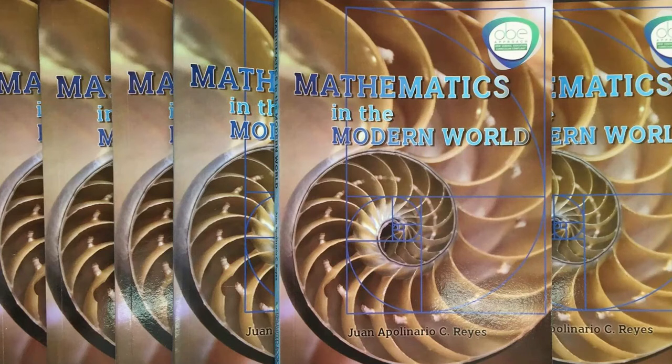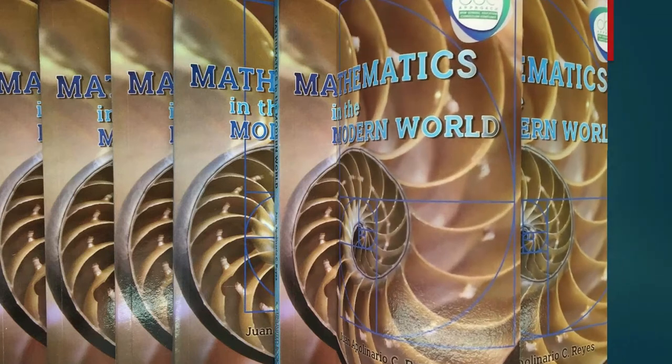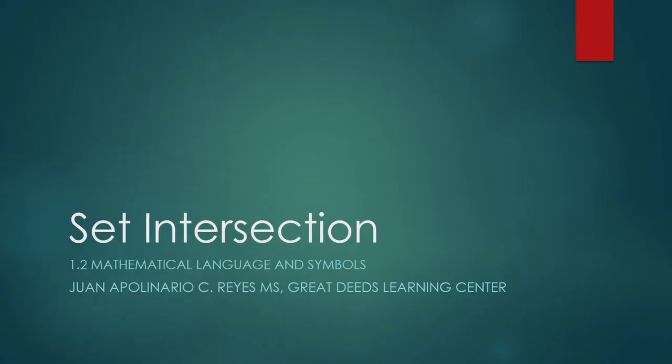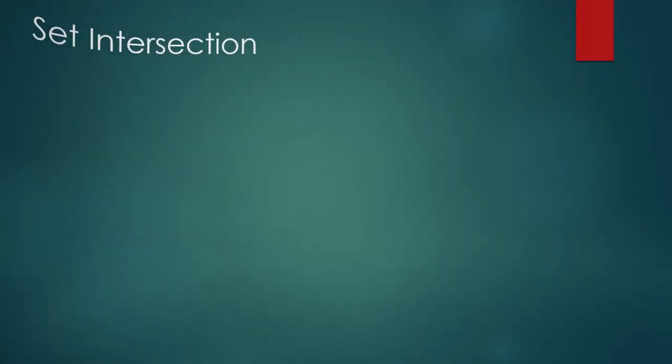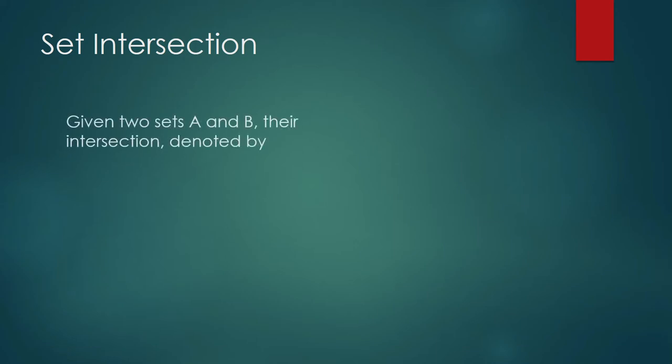Set intersection. We are in the topic of set operation and we shall talk about the first operation of set intersection. The analog of set operations in the set of real numbers would be the operations of addition, subtraction, multiplication, division, and so on. So intersection is like that. It is an operation that we apply between two sets. What is set intersection?